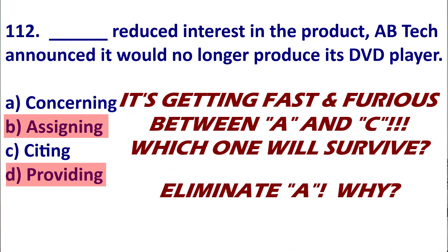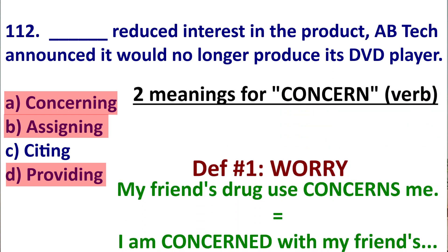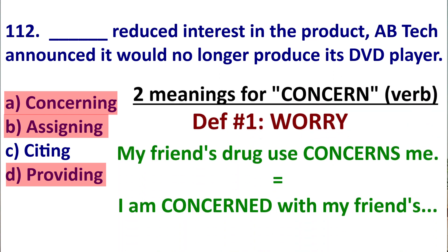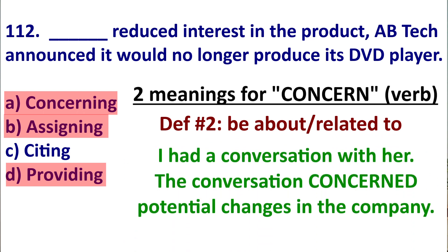Next — this might disappoint you — eliminate A. Let's look at two meanings of 'concern.' The first is worry: 'My friend's drug use concerns me' (verb), or 'I am concerned by my friend's drug use' (adjective). The other meaning of concern is to be about. For example, 'I had a conversation with someone — the conversation concerned potential changes in the company,' meaning the conversation was about potential changes. So you can see two different uses of concern.